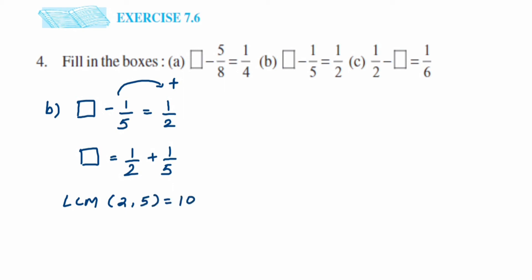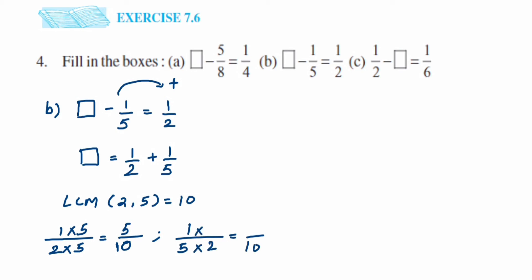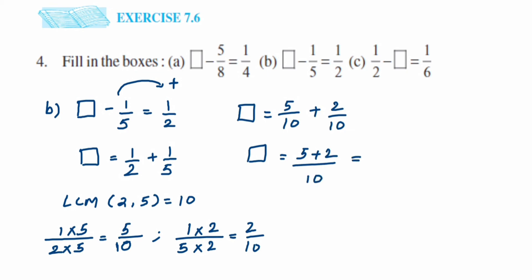We take the LCM of 2 and 5, which is 10. For the first number, 1 upon 2, we multiply numerator and denominator by 5 to get 5 upon 10. For the second number, 1 upon 5, we multiply by 2 to get 2 upon 10. Now we add: 5 upon 10 plus 2 upon 10 — denominators are the same, so we add the numerators: 5 plus 2 is 7. The answer is 7 upon 10.